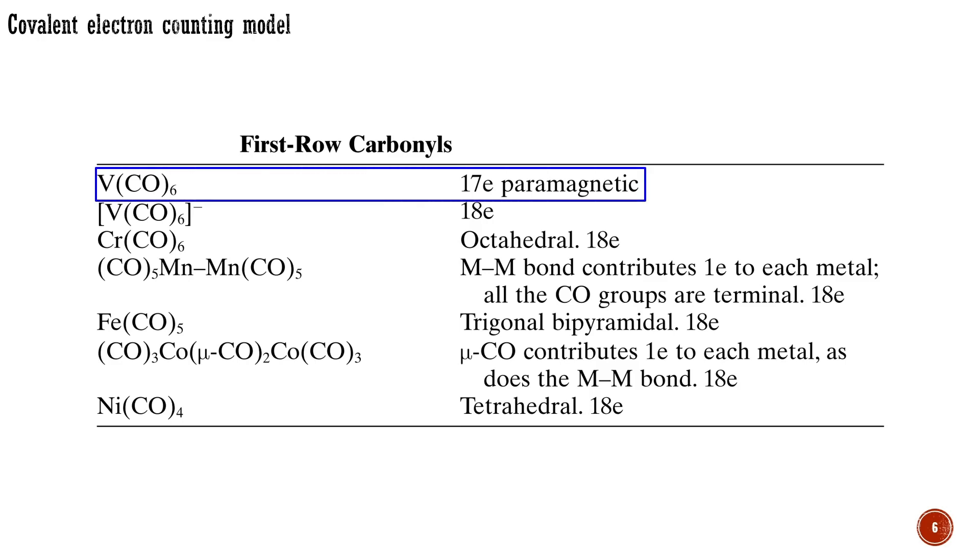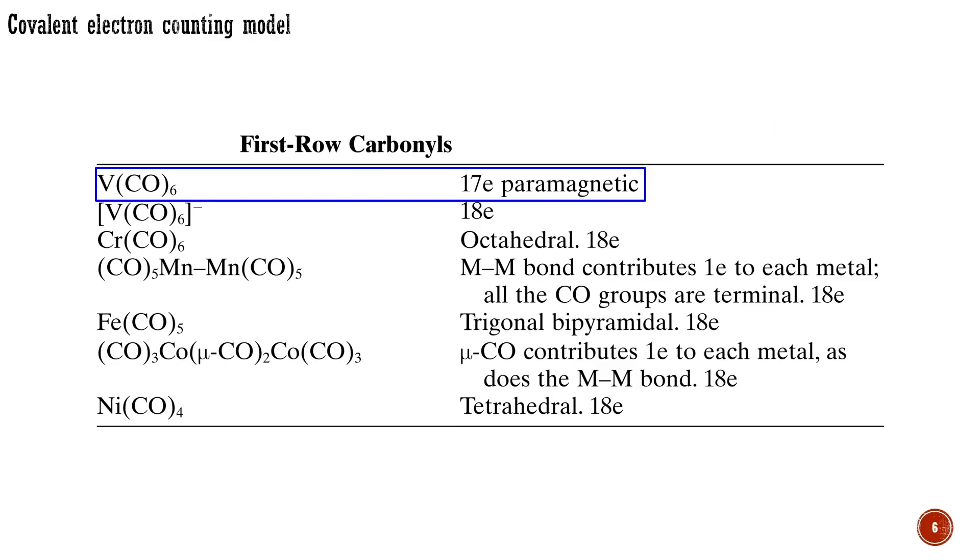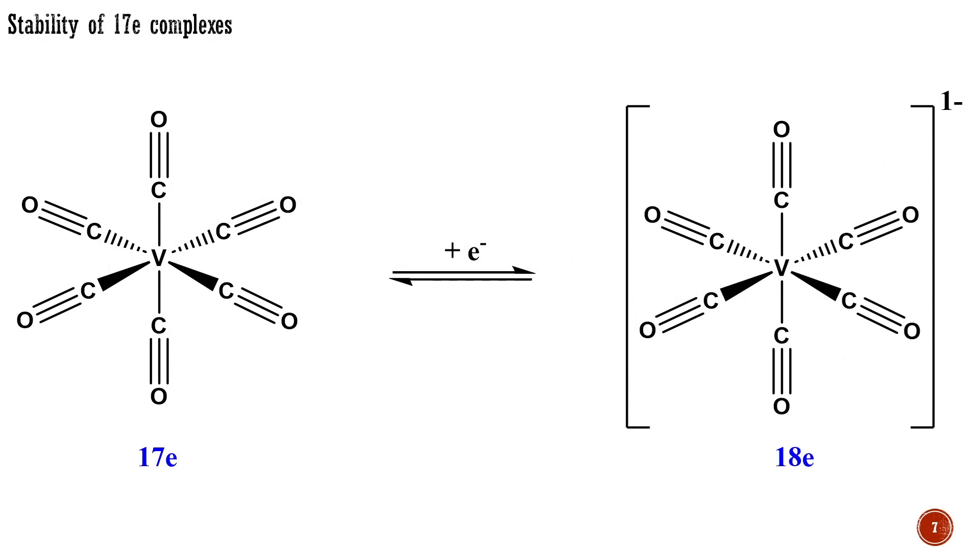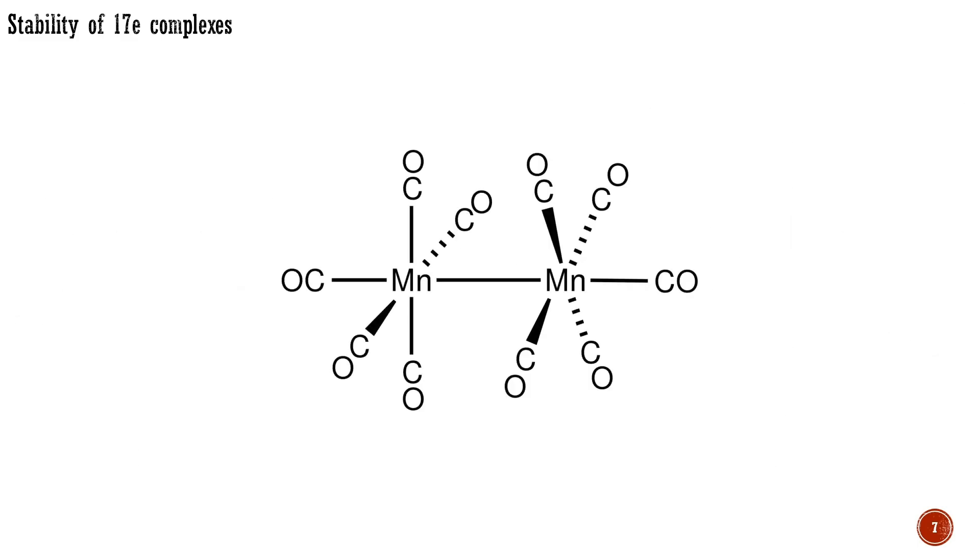Where the metal starts with an odd number of electrons, we can never reach 18 just by adding two-electron ligands such as carbon monoxide. Each carbonyl complex resolves this problem in a different way. Vanadium hexacarbonyl is stable in spite of being 17-electron, but it is easily reduced to the 18-electron anion. The 17-electron reactive transient manganese pentacarbonyl is not isolable but instead dimerizes to the stable 18-electron dimer. As a 5-coordinate monomer, there is more space available to make the metal-metal bond than in vanadium hexacarbonyl.